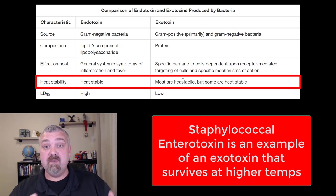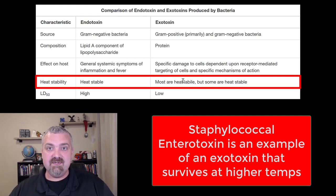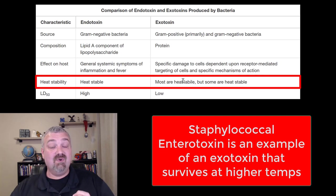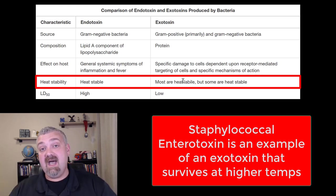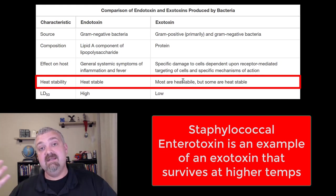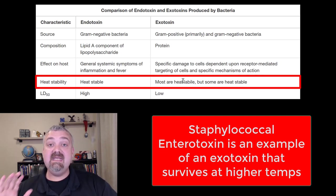Staphylococcal enterotoxin can still cause foodborne illness even in food that's been cooked above that temperature. I always use this as an example of how you can properly prepare food twice and still get sick. You cook it to the appropriate temperature, then let it sit out at a family reunion too long — staphylococcal organisms grow and produce toxins. Then when you reheat the leftovers to the appropriate temperature, that kills the staph organisms, but this toxin is heat stable, so the toxin is still there. You cooked the food twice, cooked it well twice, and still got sick because it sat in the danger zone too long. Staphylococcal enterotoxin is a really important example of an exotoxin that is heat stable.